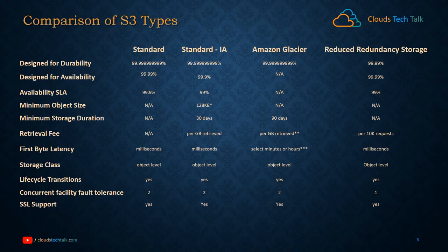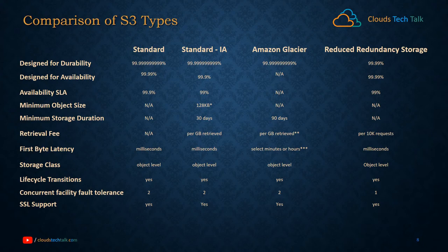Let's compare the different characteristics and features of these storage types, captured from the AWS website. There are four storage types and several comparison dimensions. For designed durability: Standard, Standard IA, and Amazon Glacier all have 11 nines durability, while Reduced Redundancy Storage has 99.99% durability. For availability, Standard and Reduced Redundancy Storage are highly available, but Standard IA is 99.9%. AWS also declares availability SLAs for each.